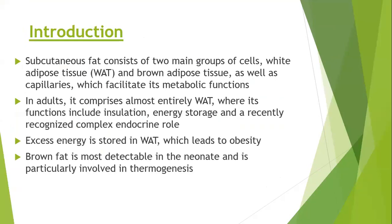Introduction. The subcutaneous fat consists of two main groups of cells: the white adipose tissue and the brown adipose tissue. In addition, the adipose tissue contains capillaries which run in the septa and that facilitates its metabolic functions. In adults, the fat is almost completely comprising of white adipose tissue, where its main functions are insulation, energy storage, and a recently recognized complex endocrine role.